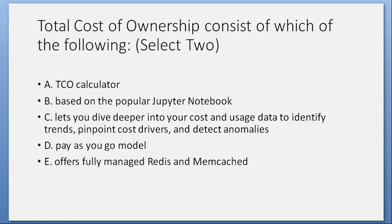Total cost of ownership consists of the following — select two. A. TCO calculator. B. Based on the popularity of Jupyter Notebook. C. Let you dive deeper into your costs and usage data to identify trends, pinpoint cost drivers, and detect anomalies. D. Pay-as-you-go model. E. Offers fully managed Redis and Memcached. Answer: A. TCO calculator, and D. Pay-as-you-go model.